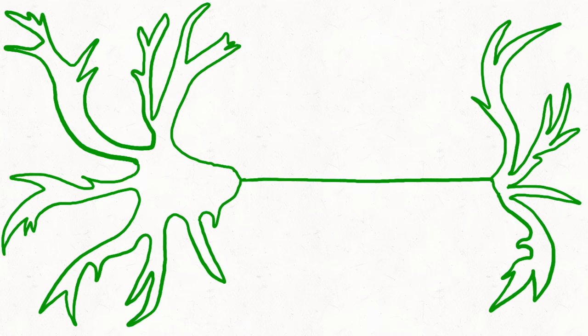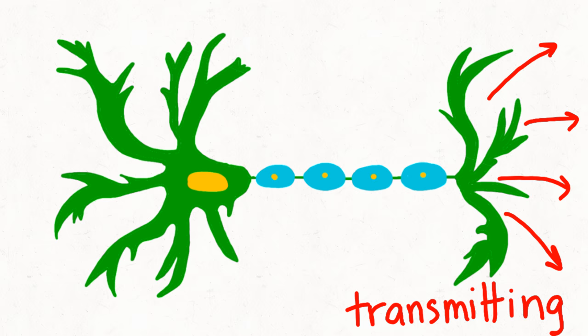The neurons, which are fundamental units of the nervous system and brain, are responsible for receiving sensory information and transmitting it to other cells.